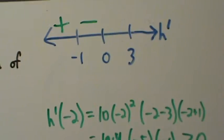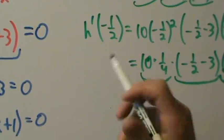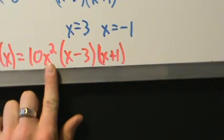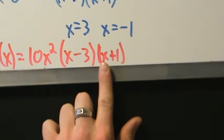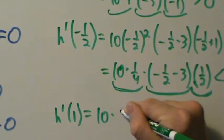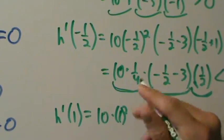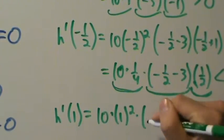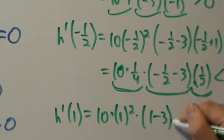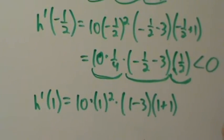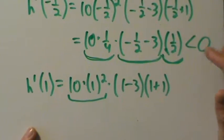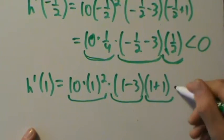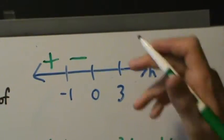For the interval 0 to 3, let's pick x equals 1. So h prime of 1 equals 10 times 1 squared times the quantity 1 minus 3 times the quantity 1 plus 1. That's positive times negative times positive, which is negative. So the derivative is negative in this interval as well.